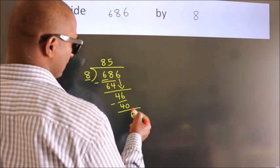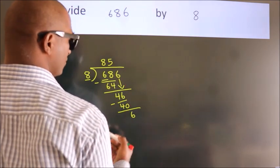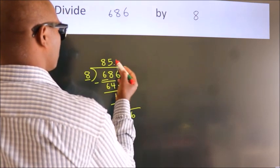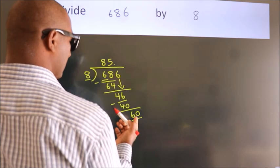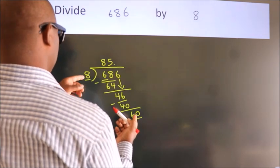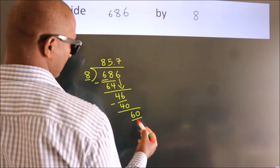After this, no more numbers to bring down. So what we do is, we put a decimal point and take 0. So, 60. A number close to 60 in the 8 table is 8 times 7, which is 56.